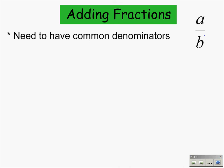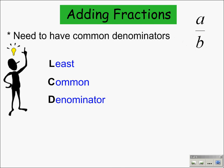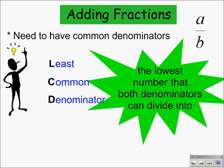A denominator is the number that we find in the bottom of the fraction, so we need to make sure that those are exactly the same. What we do is we try to find the least common denominator, which is the lowest number that both denominators can divide into.